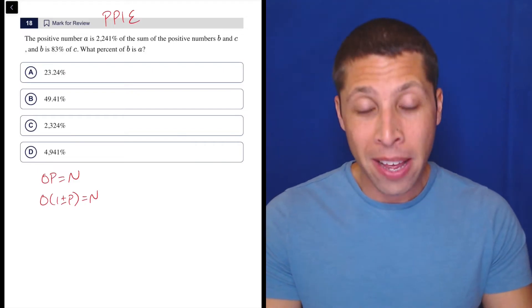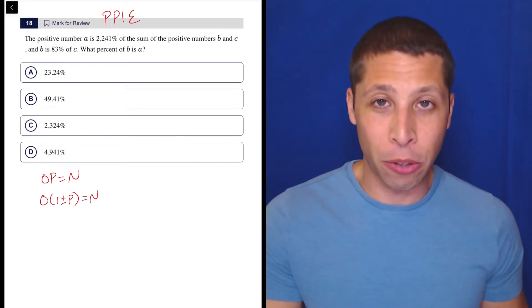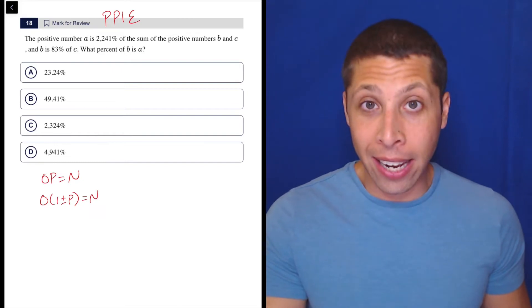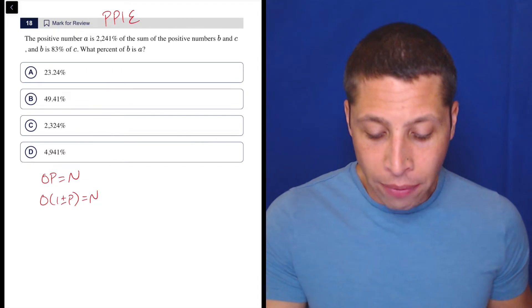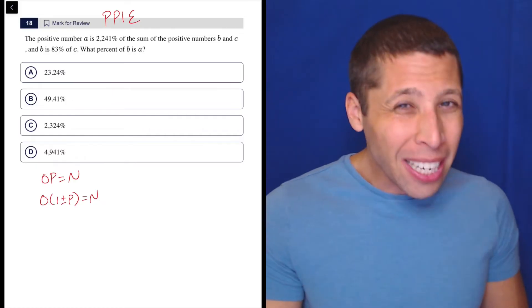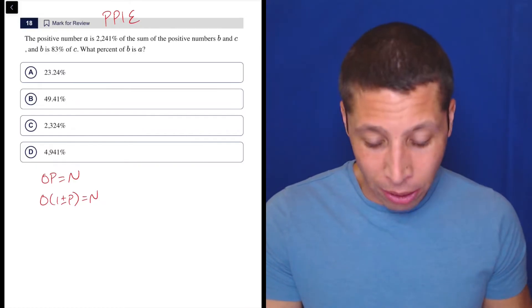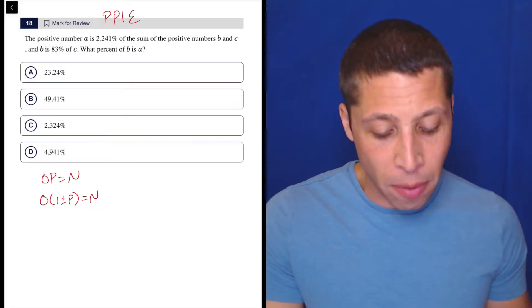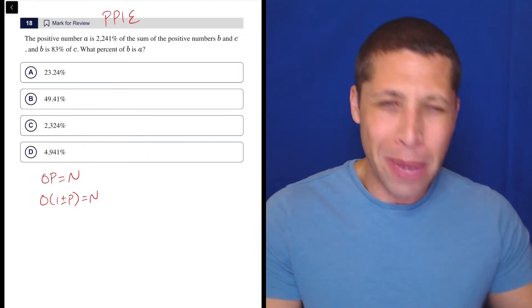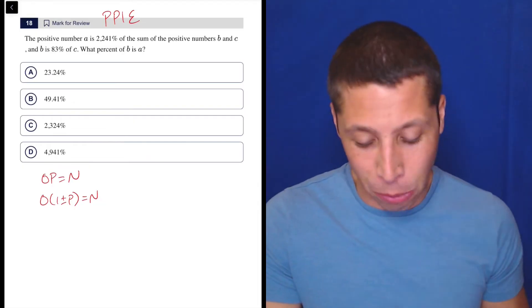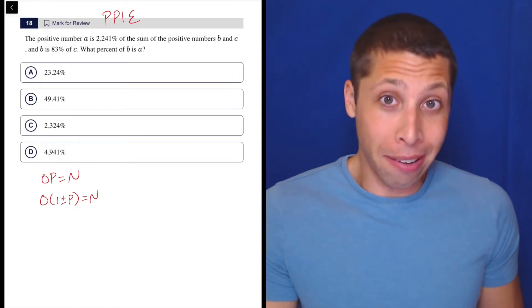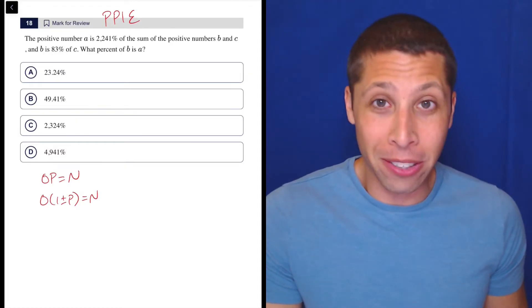Now in order to use them, I need to be able to fill in all these variables. So the P is the percentage. It looks like I've got that, but then the O and the N, those are going to be the original values, the new values. And if I read, I can see that I'm kind of given those things, but not really. The positive number A is 2,241% of the sum of the positive numbers B and C, and B is 83% of C. So in a way, I could plug A, B, and C into these formulas and start to make some sense of it.